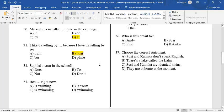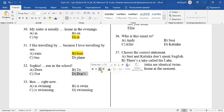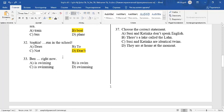32. Sophia, run in the school. It's an imperative sentence. To make a negative imperative sentence, we use don't plus the base form of the verb. Sophia, don't run in the school. 33. Ben right now. Now is the signal word of present continuous tense form. Subject plus to be plus verb ing. The answer is C. Ben is swimming right now.